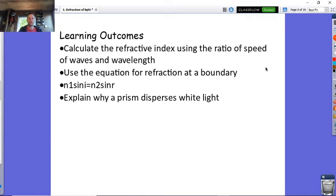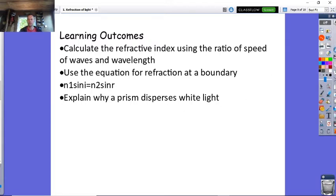We'll look at the equation for refraction at a boundary, n1 sin i equals n2 sin r, and explain why a prism disperses white light. We have to make this video in two halves.